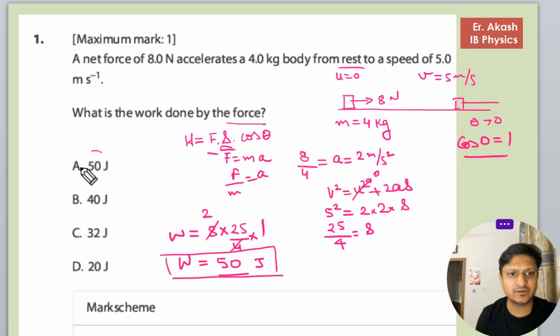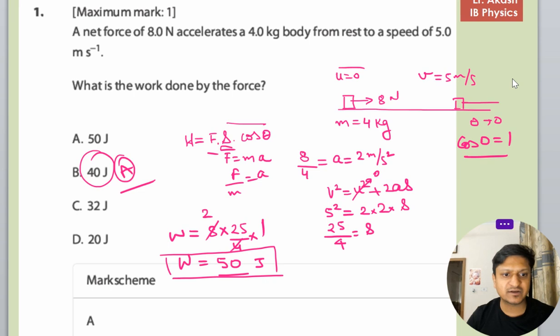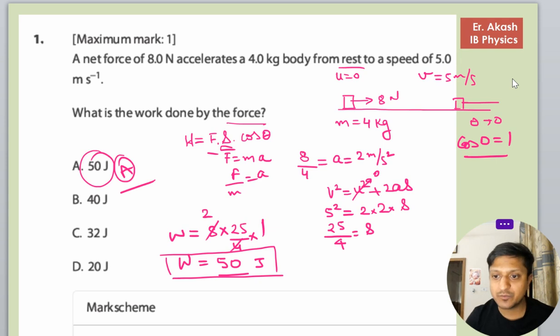So 50 is the right answer. Now we will check the mark scheme. Mark scheme says A is the right answer. Hope you understood how to calculate this question. This question uses different equations and then we have to finally put it into the equation of work. Thank you for watching this video. If you have some doubts you can always put your doubts in the comment section.